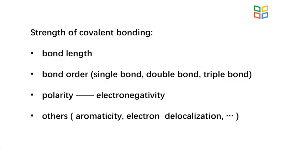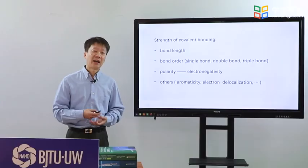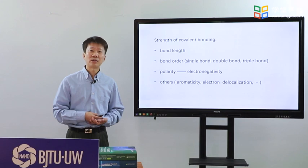In brief, the strength of covalent bonding is associated with bond length, bond order, polarity, and for example, aromaticity, electron delocalization, and others.